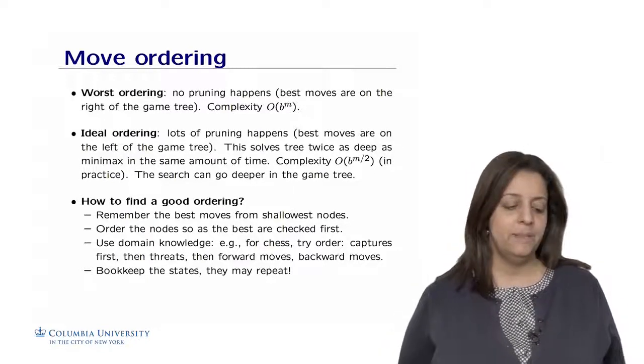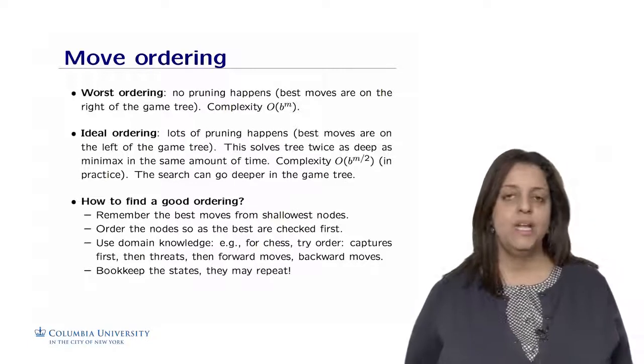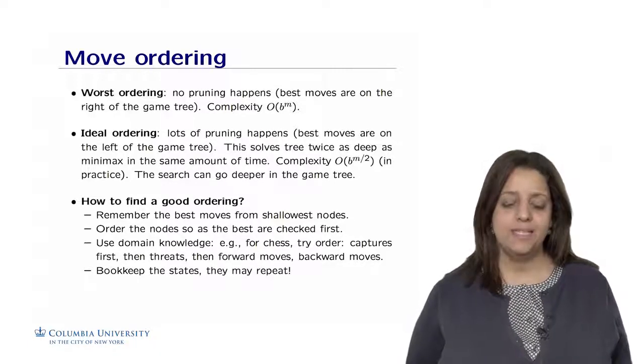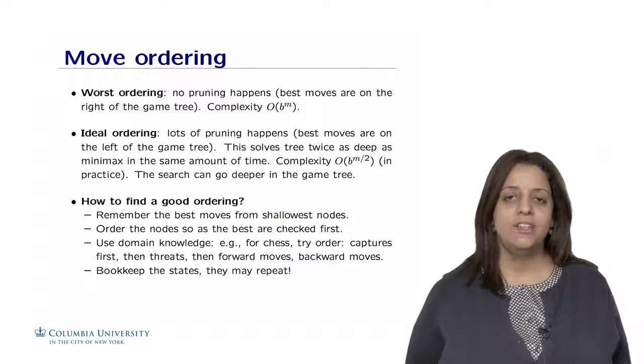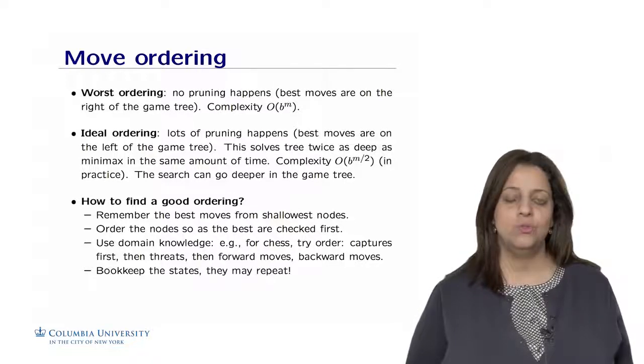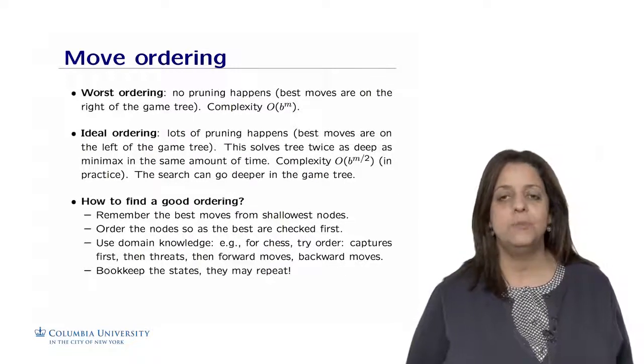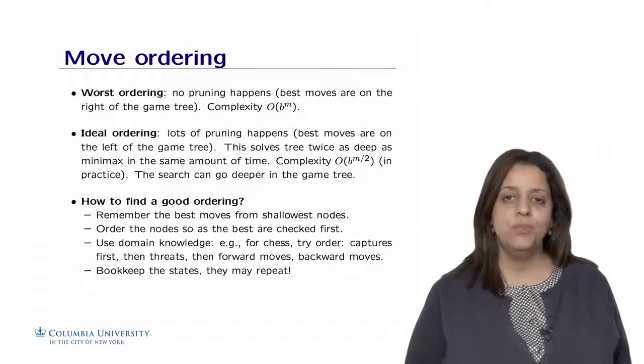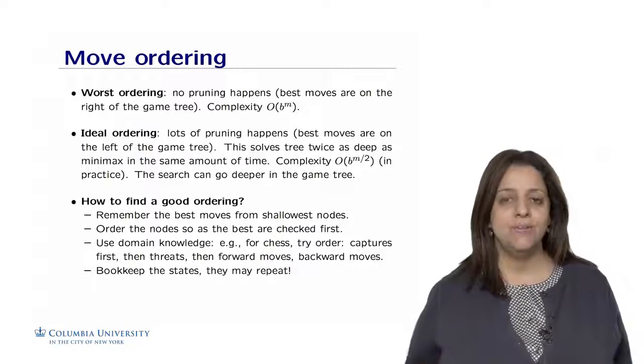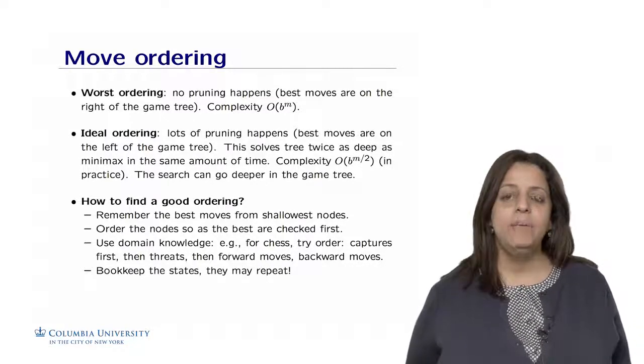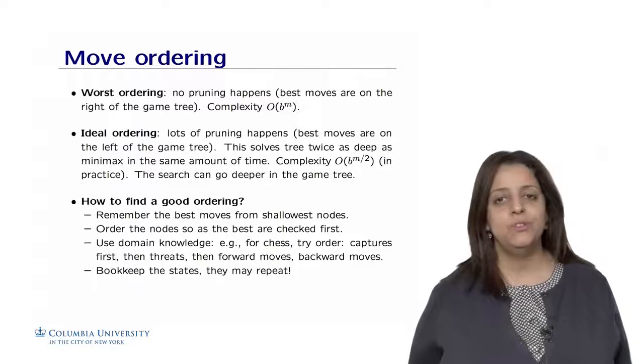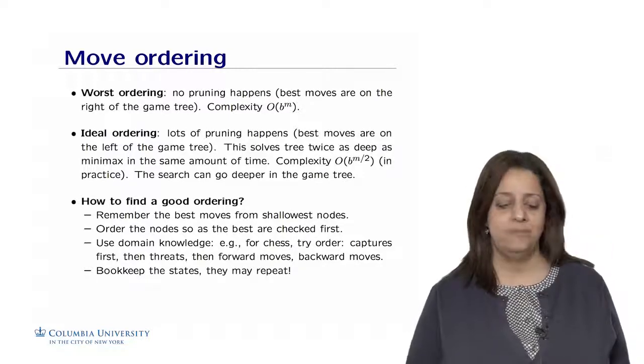The ideal ordering for alpha-beta pruning is when a lot of pruning happens and the best moves are actually on the left of the game tree. So remember, it's a DFS search, which means that we're going to get the best moves first, which means that when we go to the right-hand side of the game tree, it's going to be the worst moves, and we are not going to explore them because we have better alphas and betas.